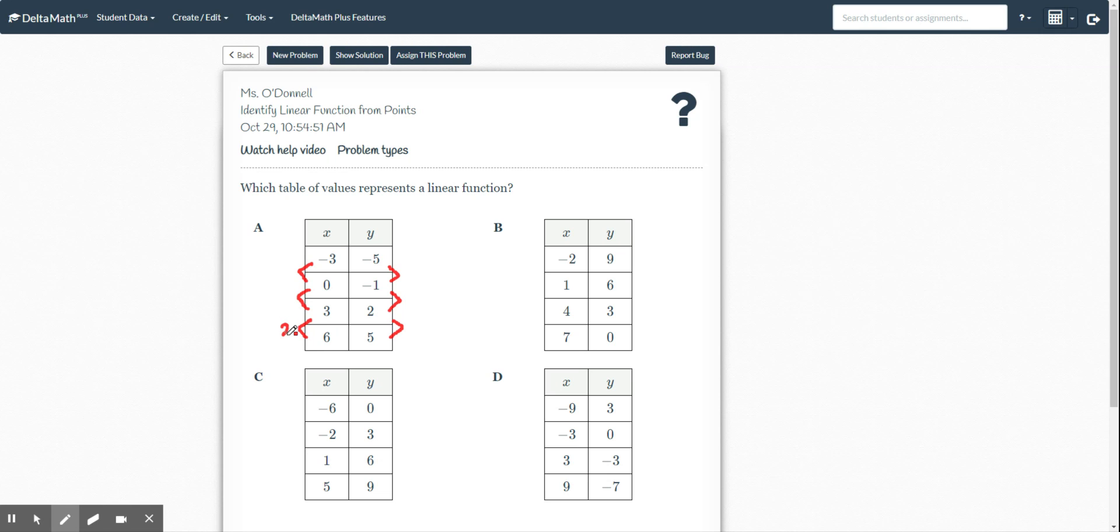So let's see here. 6 minus 3 is 3. 3 minus 0 is 3. 0 minus negative 3 is 3. 5 minus 2 is 3. 2 minus negative 1 is 3. Negative 1 minus negative 5—uh-oh, that one's going to give us 4. So that's not going to be linear.